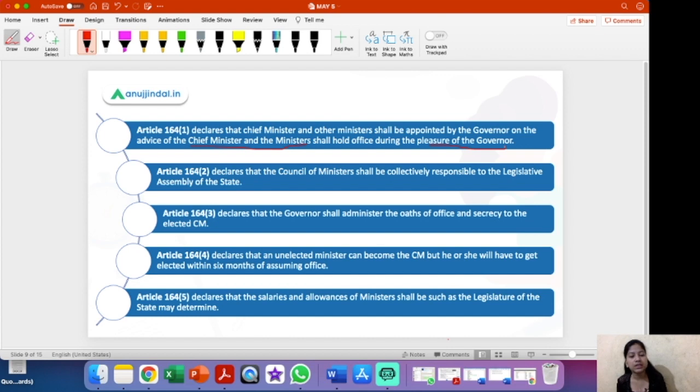Article 164 sub-clause 2 declares that the council of ministers shall be collectively responsible for the legislative assembly of the state. This is again very simple. Now we have Article 164 sub-clause 3 that declares that the governor shall administer the oath of office and secrecy to the elected chief minister. Article 164 sub-clause 4 we have already discussed.